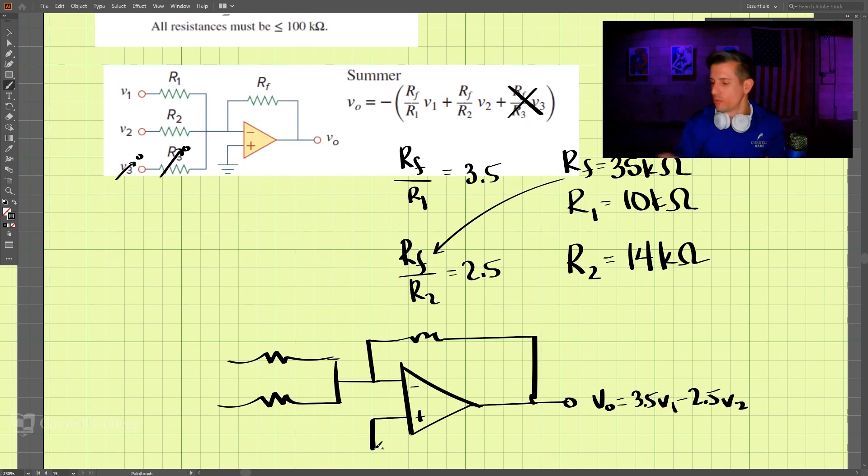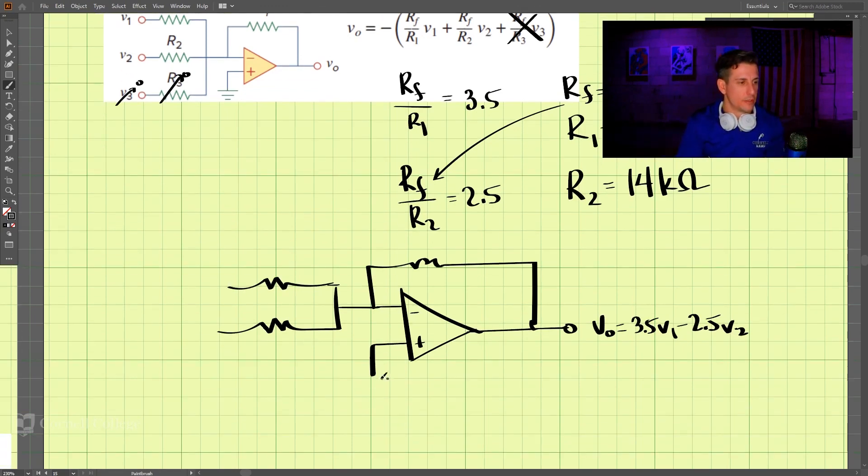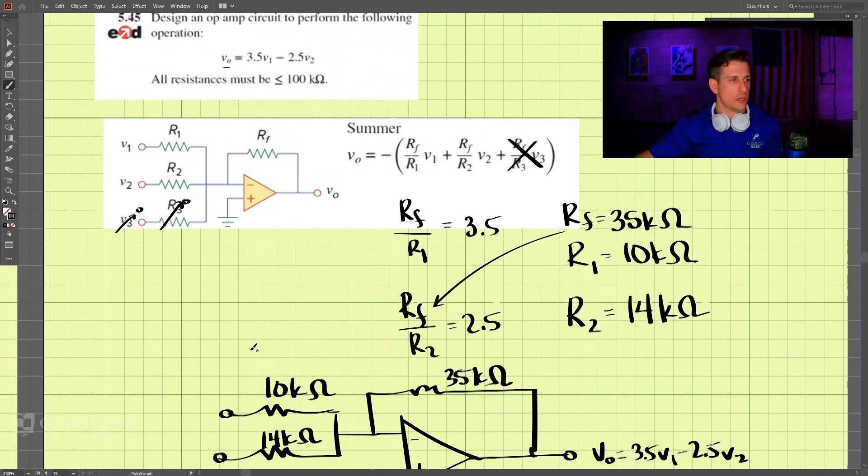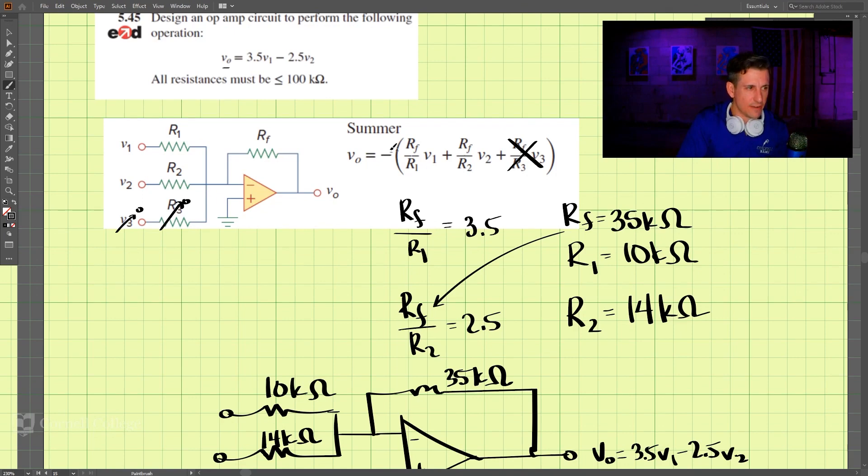And we must put this one then to ground. This is r1, which is 10 kiloohms, this one is 14 kiloohms, and this one here is 35 kiloohms. But we must take a look at this equation here. See this negative sign here?